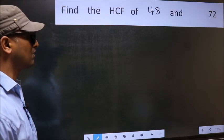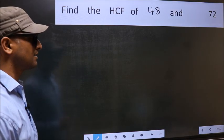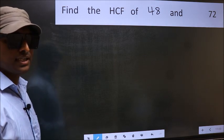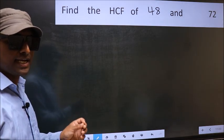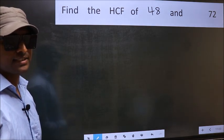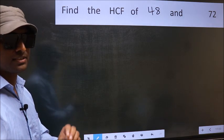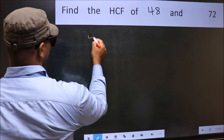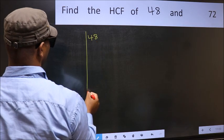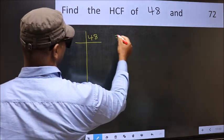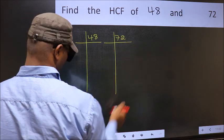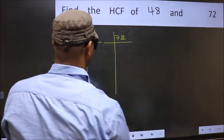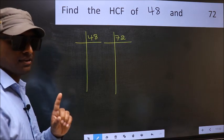Find the HCF of 48 and 72. To find the HCF, we should do the prime factorization of each number separately. What I mean is 48 and 72. This is your step 1.